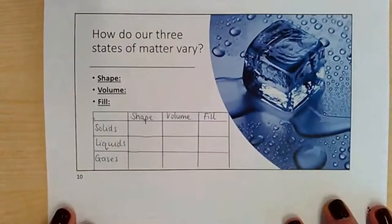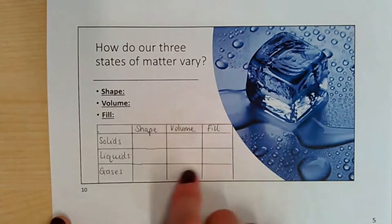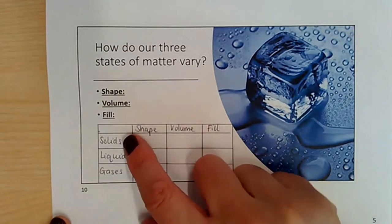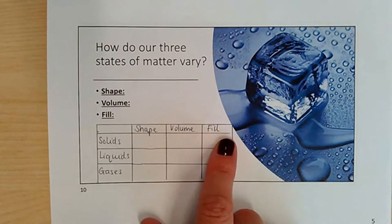So how do our three states of matter vary? What I'd like you to do is to draw a little grid. In your first column, I want you to write shape, volume, and then fill.